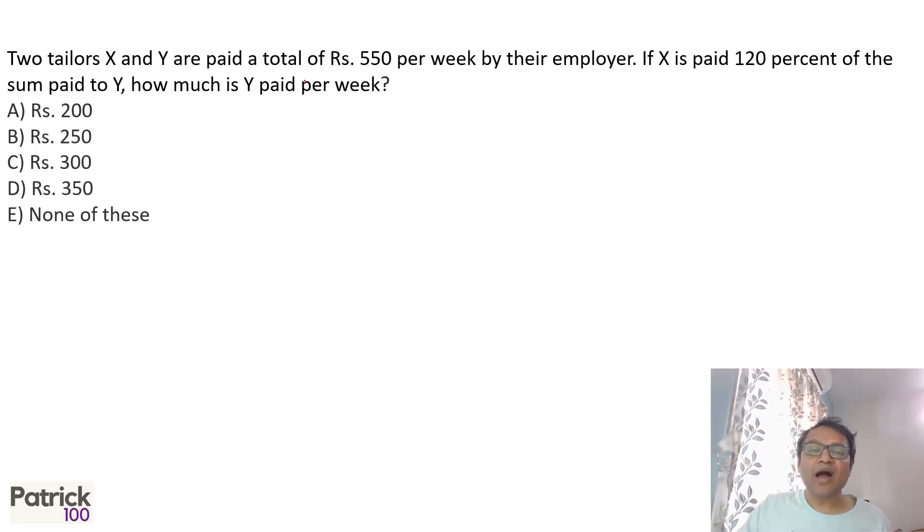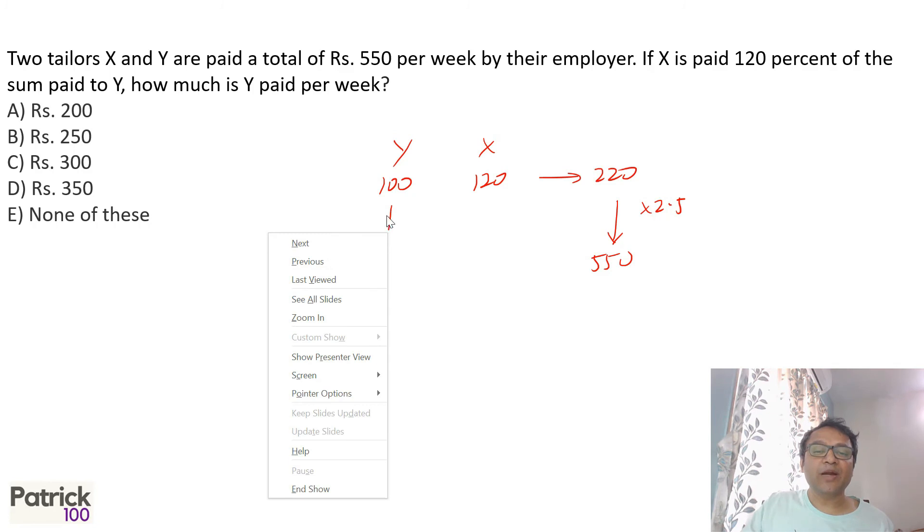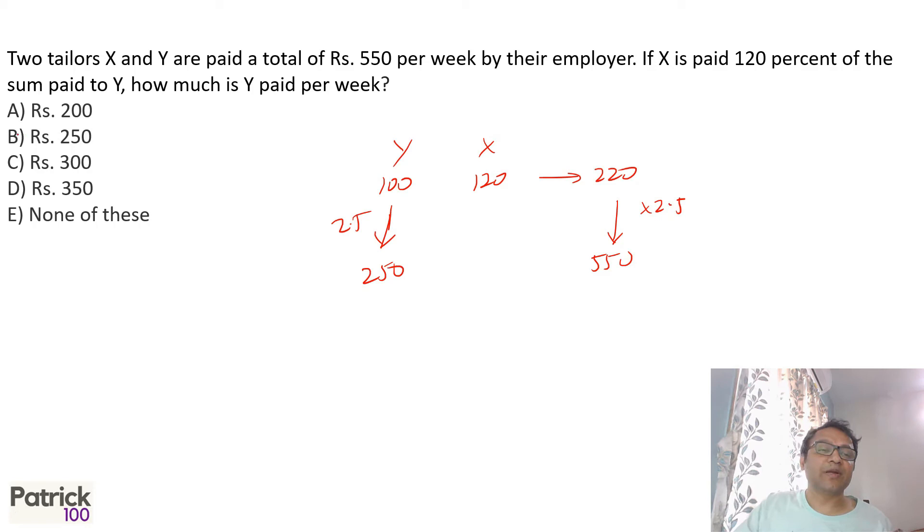Two tailors X and Y are paid a total of 550 per week by their employer. X is paid 120 percent of Y, means Y is paid 100, let's say X is paid 120, total 220. But actual total is 550, which if you notice is 2.5 times. 2 into 2.5 is 5. How much Y is paid? So Y is also paid 2.5 times, so if we take 2.5 times it will become 250 is what Y is paid, B option.